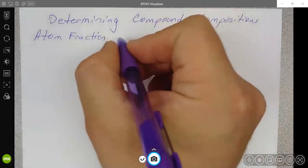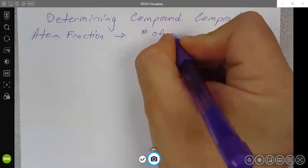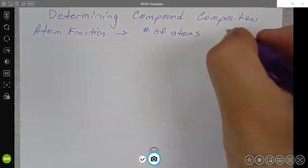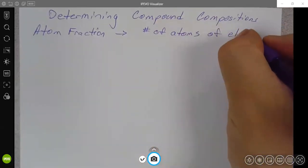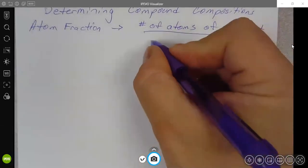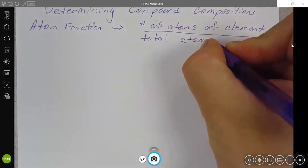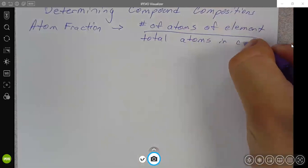But the atom fraction is just simply going to be the number of atoms of element divided by the total atoms in compound.